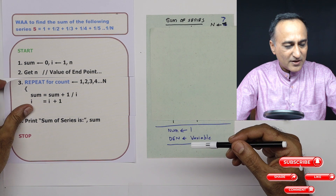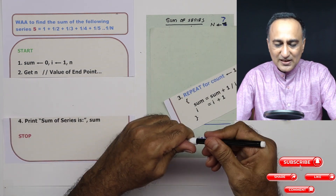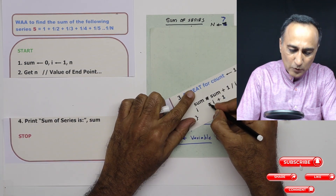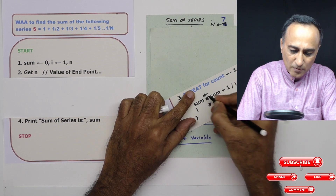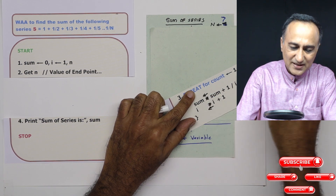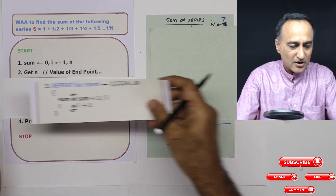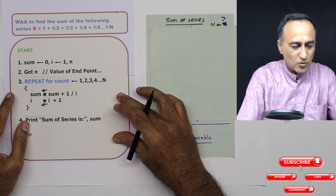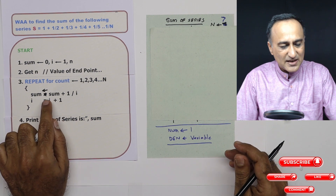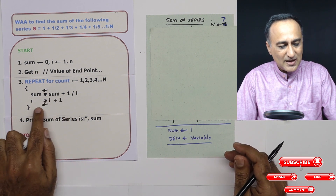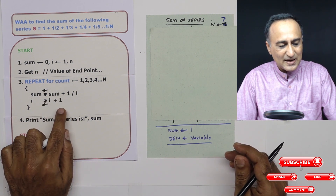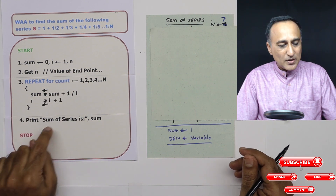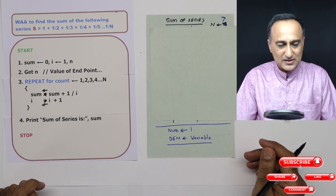One change I would note here: instead of using the equal-to sign, I should be using the assignment sign. So do make this correction in your sheets. Here I am assigning sum as sum plus 1 upon i, and i is assigned i plus 1. This particular loop is getting repeated till we get the sum of this particular series.